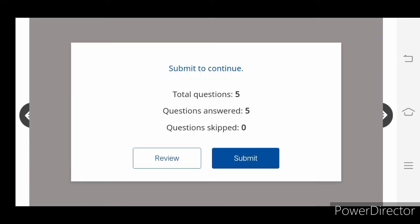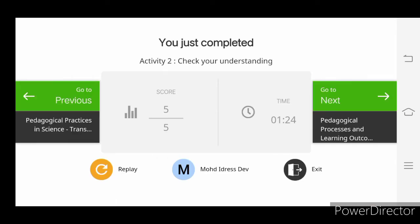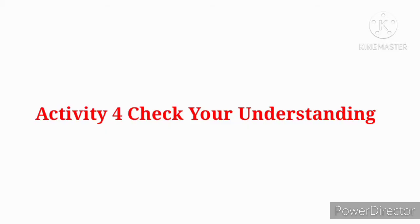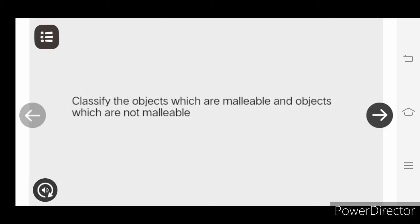Total question 5. Question answered 5. Question skipped 0. So submit. It's activity four. Check four understanding.